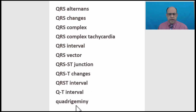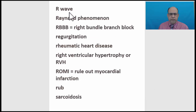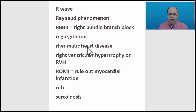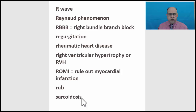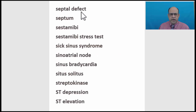QR wave. R wave. Raynaud phenomenon. Right bundle branch block. Regurgitation. Rheumatic heart disease. Right ventricular hypertrophy, or RVH. Rule out myocardial infarction. Rub. Sarcoidosis. Septal defect. Septum. Sestamibi. Sestamibi stress test.